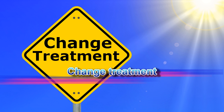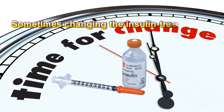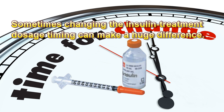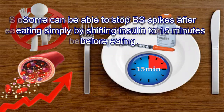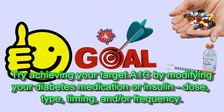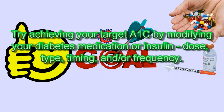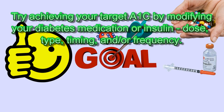Change Treatment: Sometimes changing the insulin treatment dosage or timing can make a huge difference. Some people can stop blood sugar spikes after eating simply by shifting insulin to 15 minutes before eating. Try achieving your target A1c by modifying your diabetes medication or insulin — dose, type, timing, and frequency.